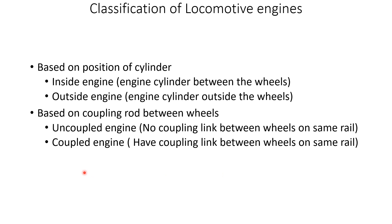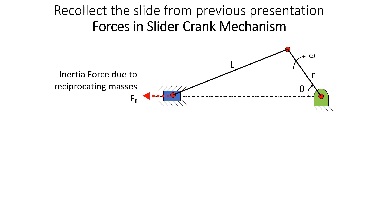These coupling links are also unbalanced masses that must be balanced. For coupled engines there will be six planes for balancing; for uncoupled engines there will be four planes — the planes of the wheels and the planes of the cylinders.